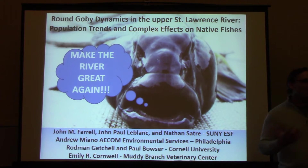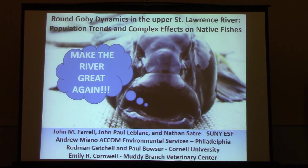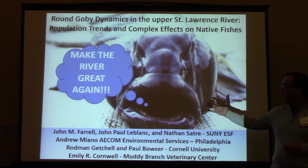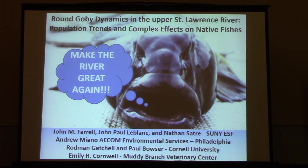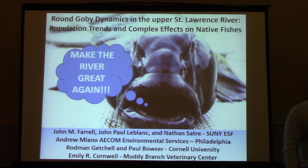I've heard a lot of love for round goby at this meeting, which is surprising. There are a lot of analogies to the current political situation. With round goby, it's an aggressive invasive species — kind of reminds me of immigration debates. But are we going to make the river great again with this species? We're going to convert energy from dreissenids and bring it back up into the food web. I want to talk a lot about trade-offs.